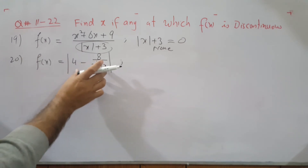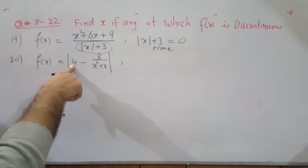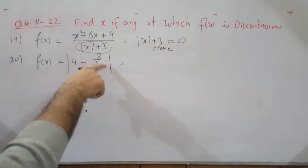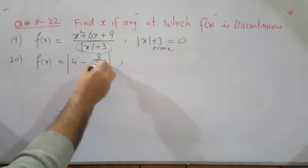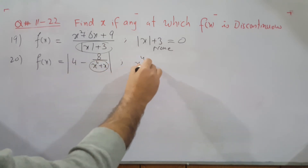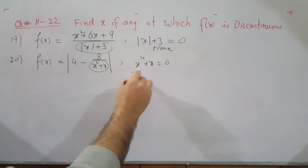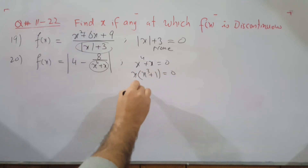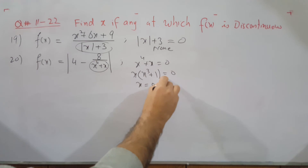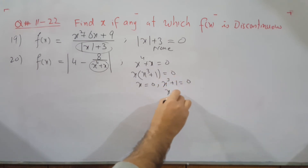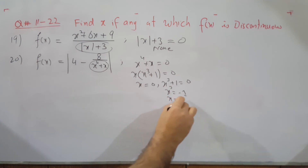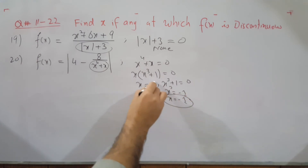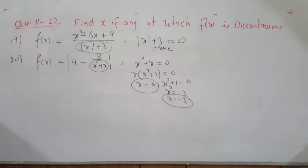Question 20: the denominator inside the absolute value is x⁴+x. Set x⁴+x equal to zero; factor out x to get x(x³+1) equals 0. This gives x equals 0 and x³ equals −1, meaning x equals −1. So the function can be discontinuous at x equals 0 and x equals −1.